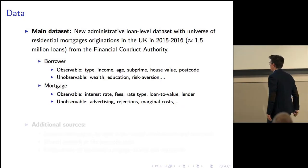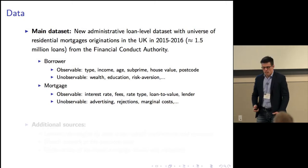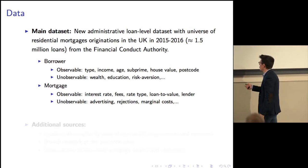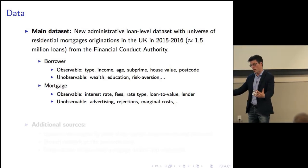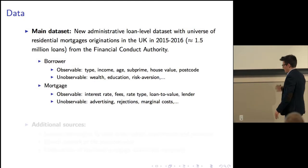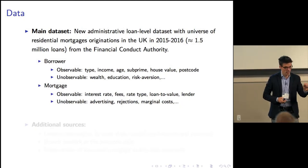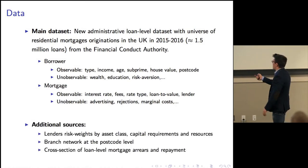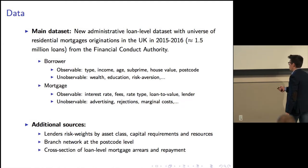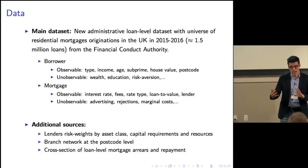On the market side I observe the interest rate, the fee, the rate type — fixed or variable — and the loan-to-value. I want to be upfront: I only have equilibrium outcomes, so I don't have data on applications and rejections. Finally, as in most industries, I don't observe the marginal cost at the product level — that's why we need a model. I pair this dataset with information on the capital requirement and resources of lenders, the branch network, and also some information on default in order to better calibrate the supply side.